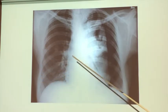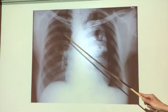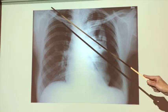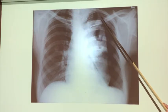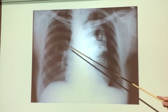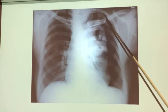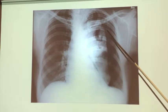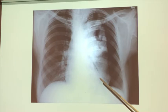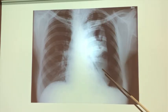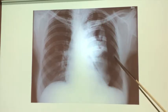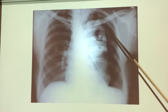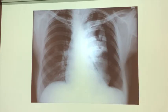This is a chest x-ray. Here is the heart, these are the lungs, this is your sternum, and these are your clavicles. This is a normal lung over here, and then here you have a collapsed lung. You can see that the lung that should be all the way out to here stops right about there. That is called a pneumothorax.